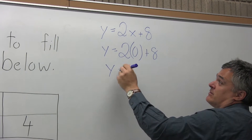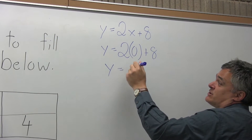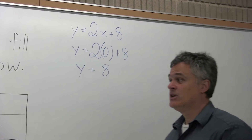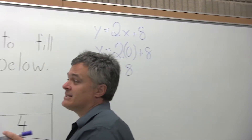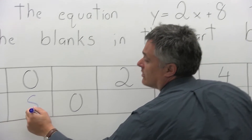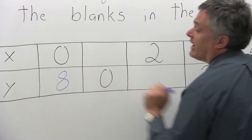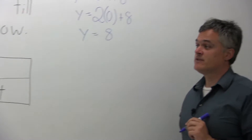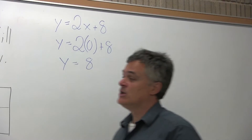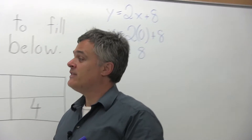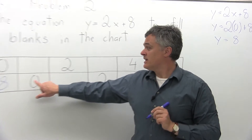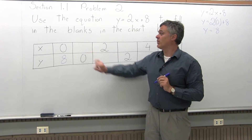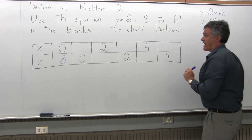2 times 0 is 0, which gives you y equals 8. So when x is 0, y equals 8. That fills in the first blank. The next part of the chart gives us a 0 for y and a blank for x.